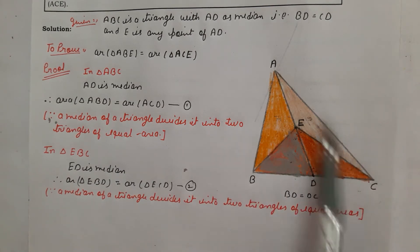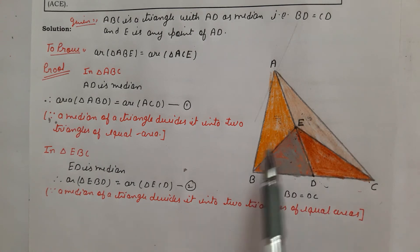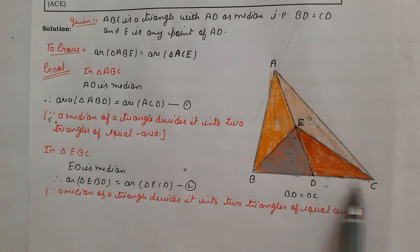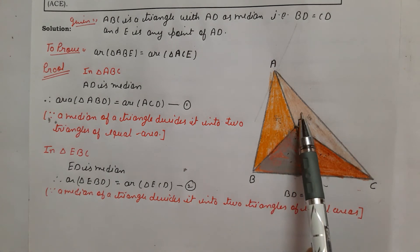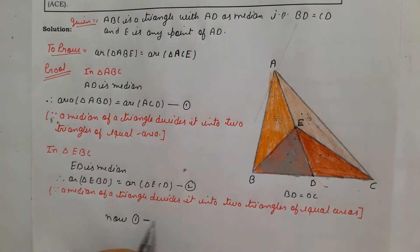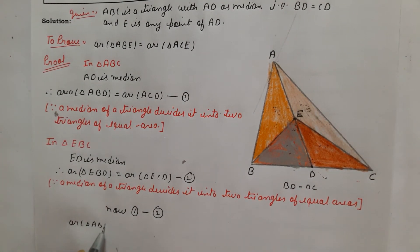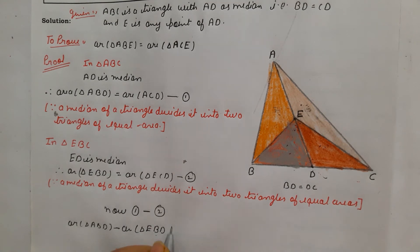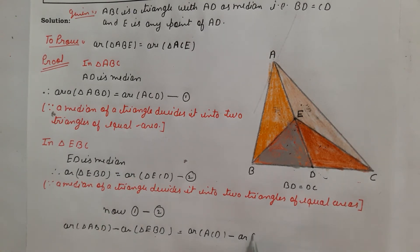Now this whole triangle ABD equals triangle ACD, and triangle EBD equals triangle ECD. We will subtract the second equation from the first. So area of triangle ABD minus area of triangle EBD equals area of triangle ACD minus area of triangle ECD.